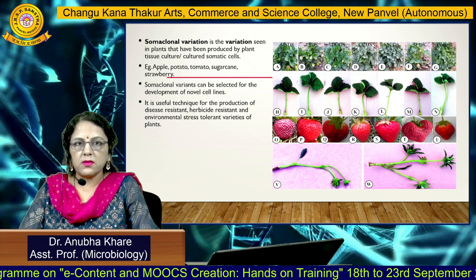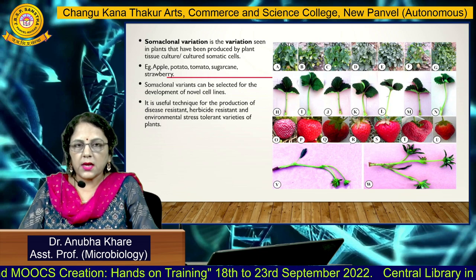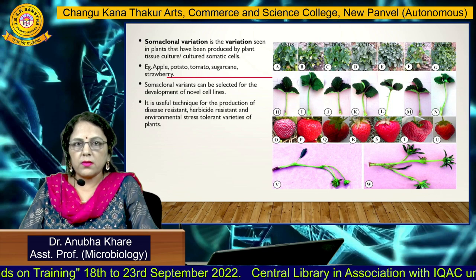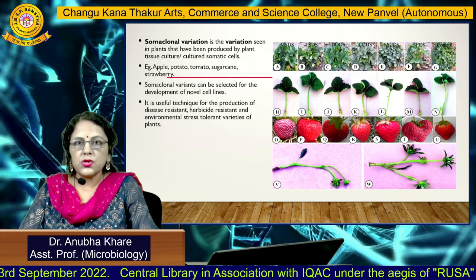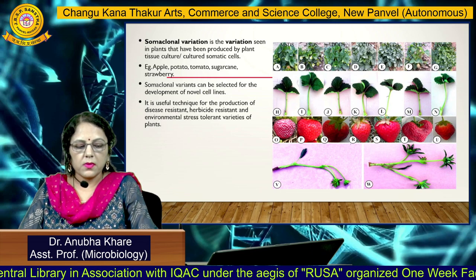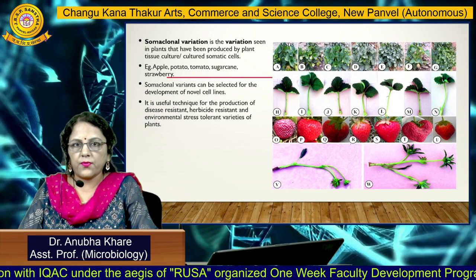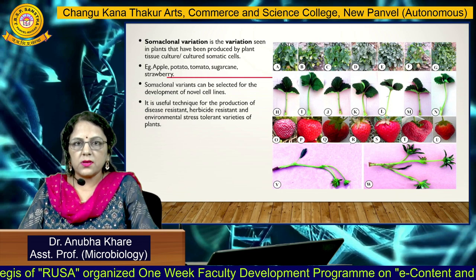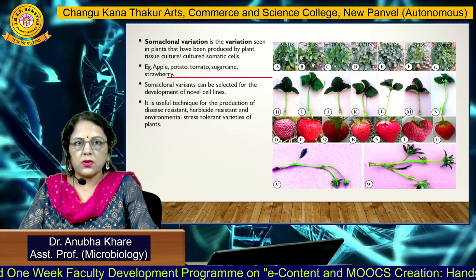Somaclonal variations may be observed phenotypically — for example, changes in fruit variety, leaf size, internode size, or plant yield. These variations may help in the improvement and quality of crops. They can also produce disease-resistant plants, herbicide-resistant plants, or environmental stress-resistant varieties through somaclonal variation and selection of variants.